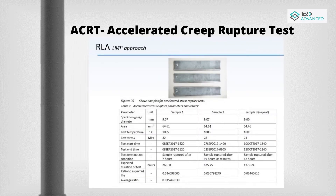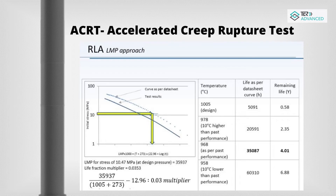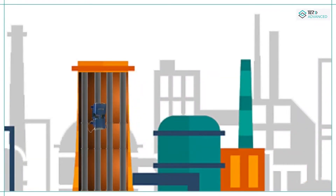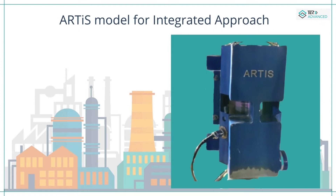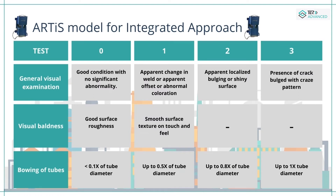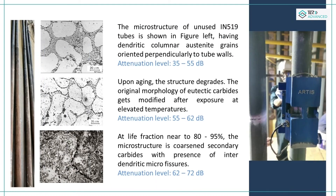Based on the minimum creep rate data and combination of operating parameters, this creep test provides residual life using the LMP equation. RTS offers remaining life assessment with an NDT approach, integrating different tests — firstly for damage classification, followed by remaining life calculation. Damage classification is categorized from rating 0 to 3, with 3 being the worst affected condition.